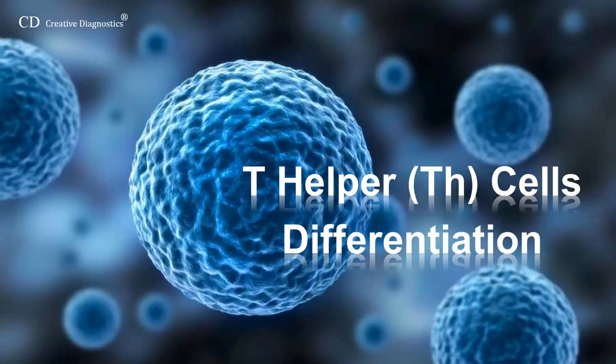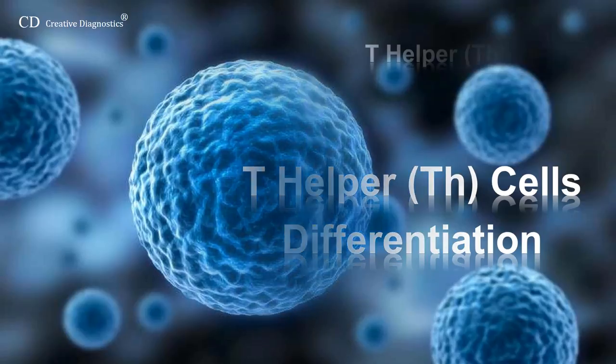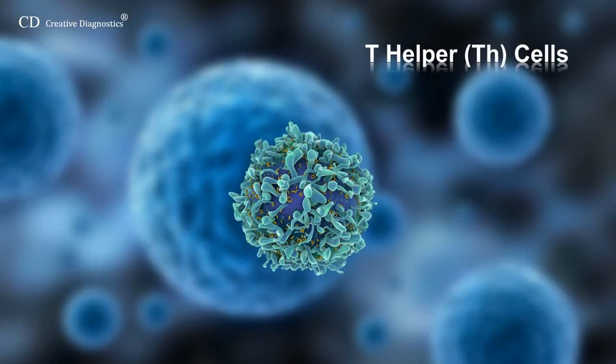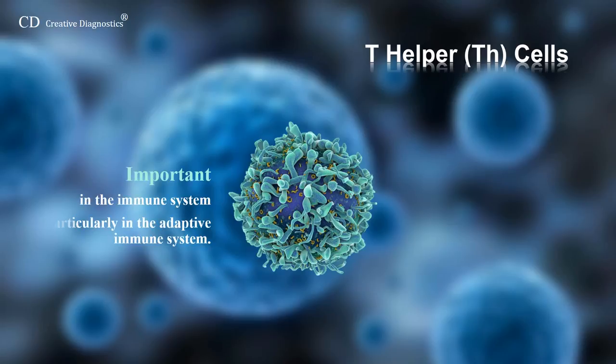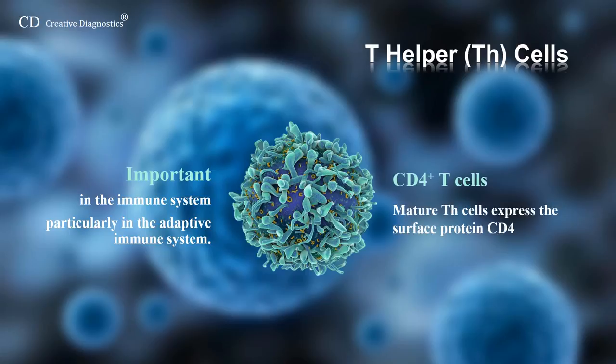T helper cells differentiation. T helper cells, or TH cells, are a type of T cell that play an important role in the immune system, particularly in the adaptive immune system. Mature TH cells express the surface protein CD4 and are referred to as CD4 positive T cells.